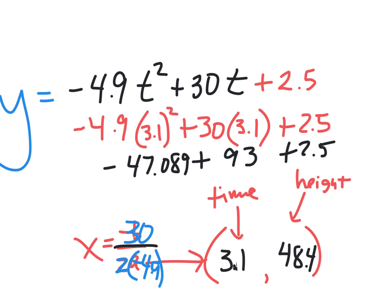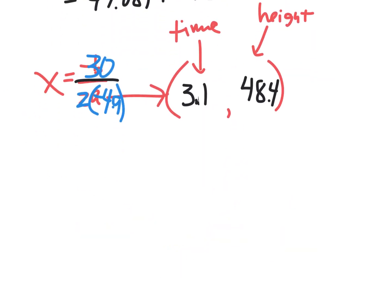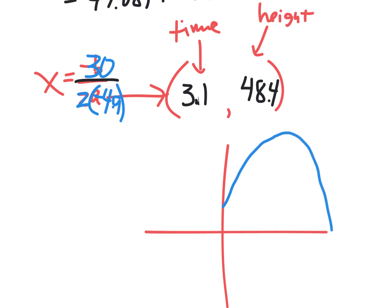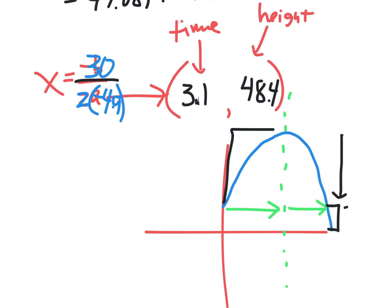It took about 3 seconds for the ball to get to its highest spot. How long would it take to come back down? It'll actually take more time to come back down than it took to go up, because it has to travel a greater distance — it started above the ground, so on the way down it has to travel all the way past the starting height to reach the ground.